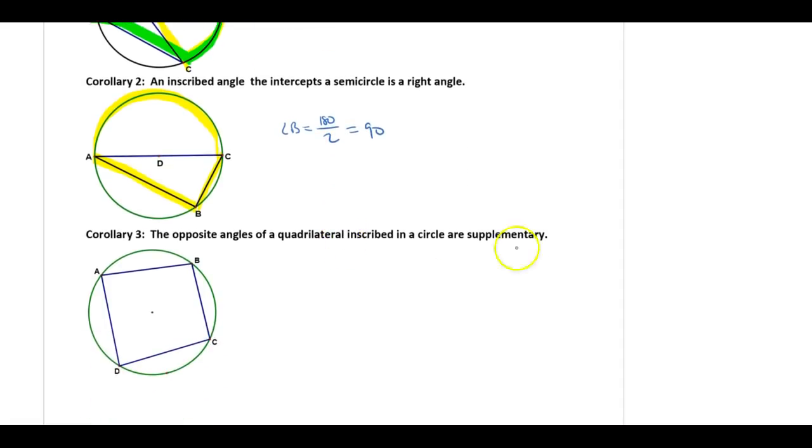Finally, opposite angles of an inscribed polygon are always going to be supplementary, which means angle A and angle C add up to 180, and angle B and angle D add up to 180.